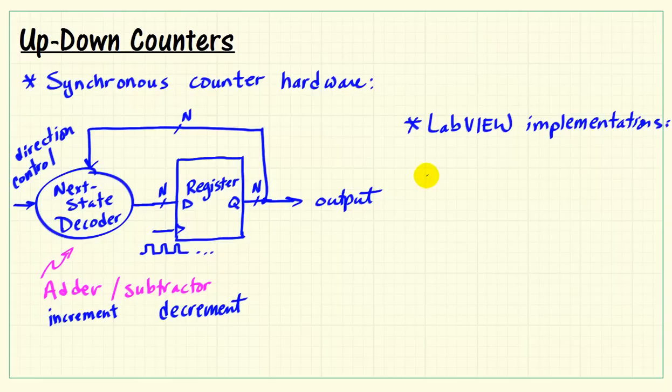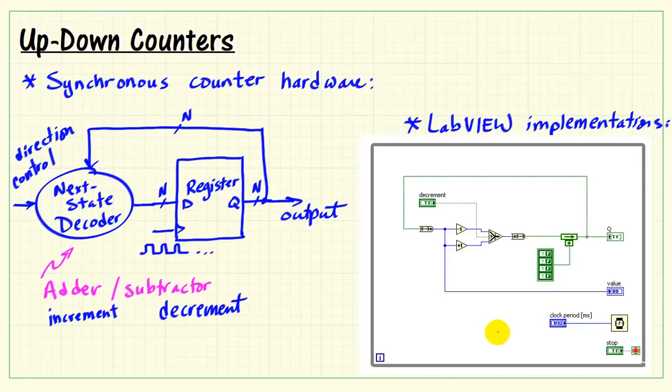The first LabVIEW implementation is based on a 4-bit register here, and it's initialized to all false values. We can think of that as all zeros, if you like. Since it's a 4-bit array, that defines this path as being 4 bits wide.